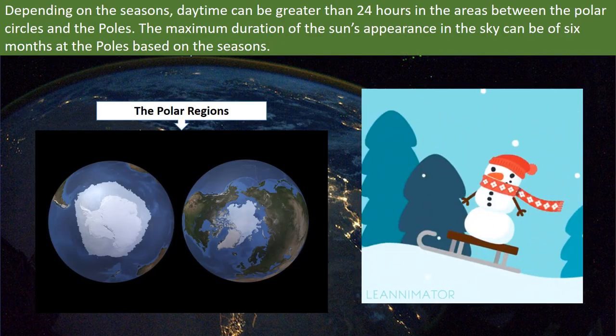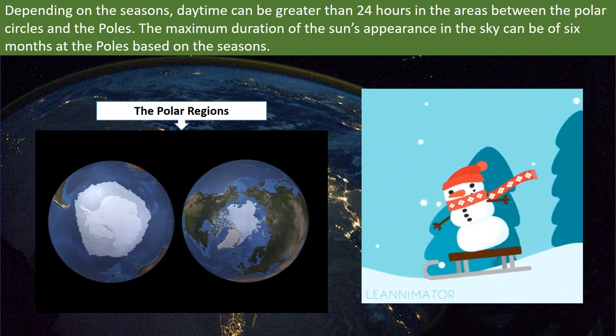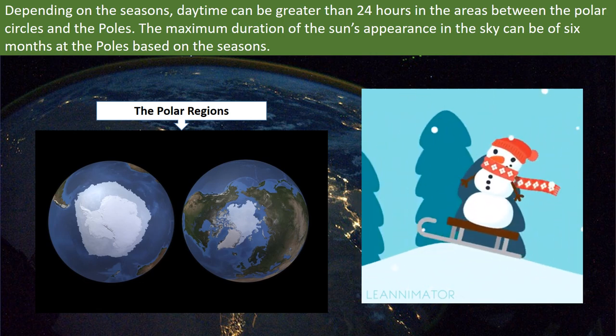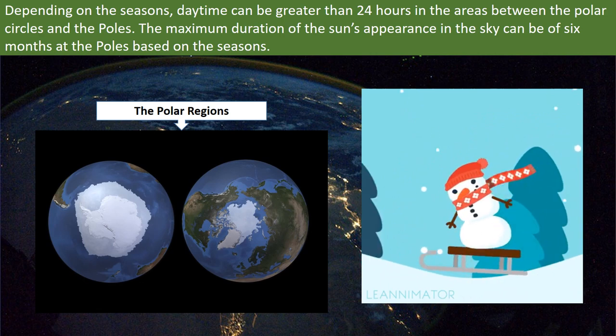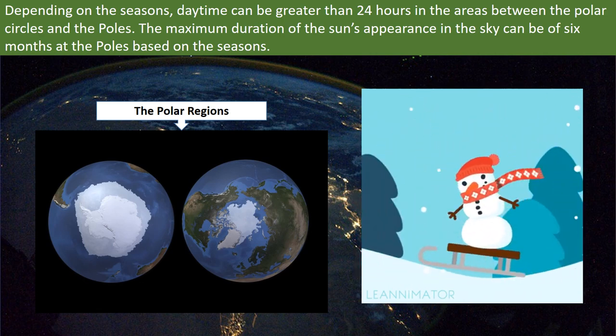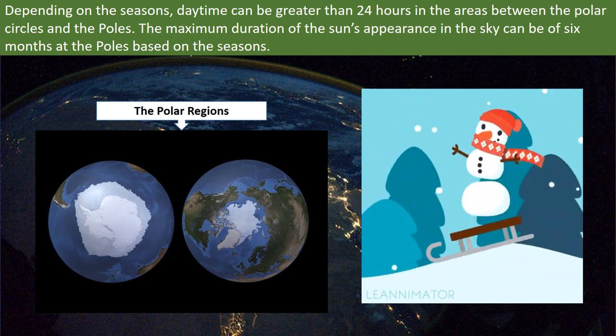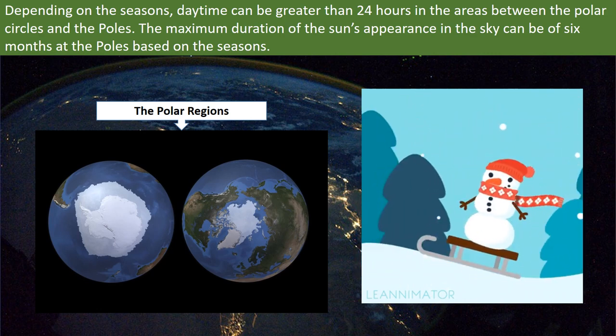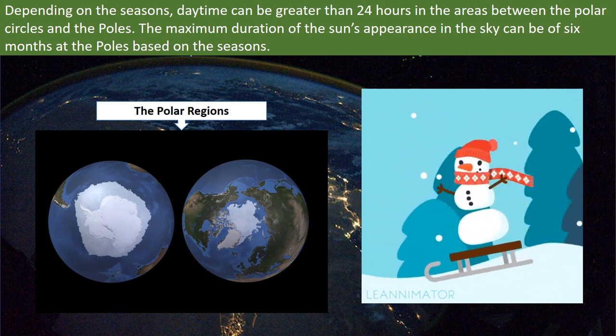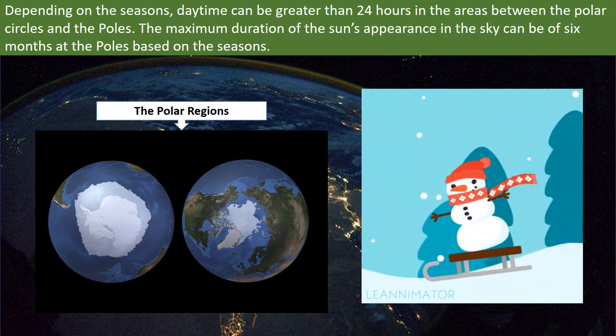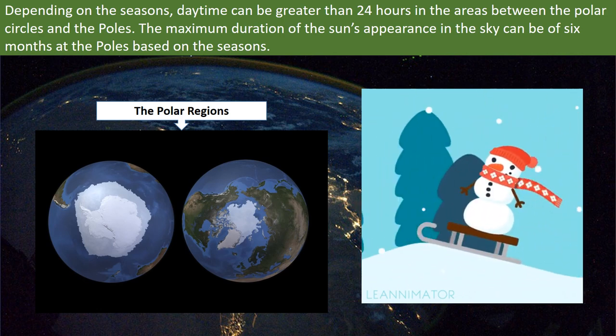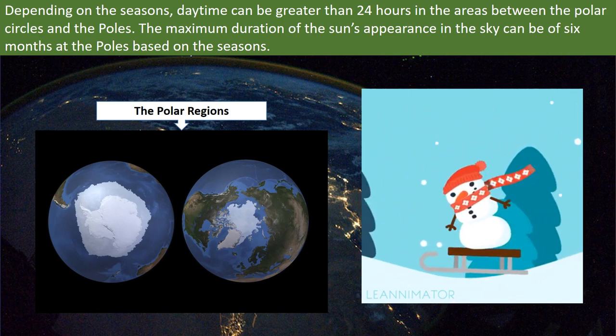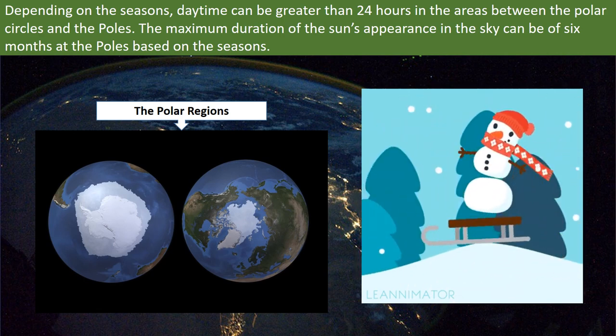Due to the tilt of Earth's axis, seasons are caused and depending on the seasons, daytime can be greater than 24 hours in the areas between polar circles and the poles. The maximum duration of the sun's appearance in the sky can be of 6 months at the poles based on the seasons, i.e. from March to September. This time the sun continues to move in a spiral on the horizon.